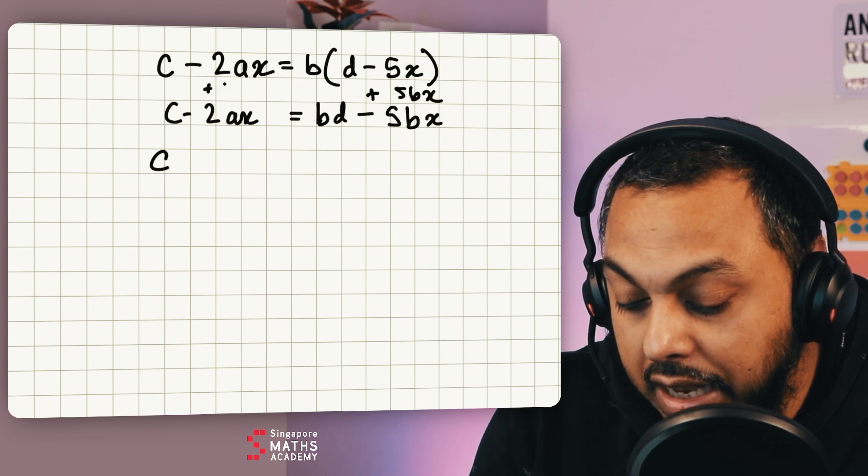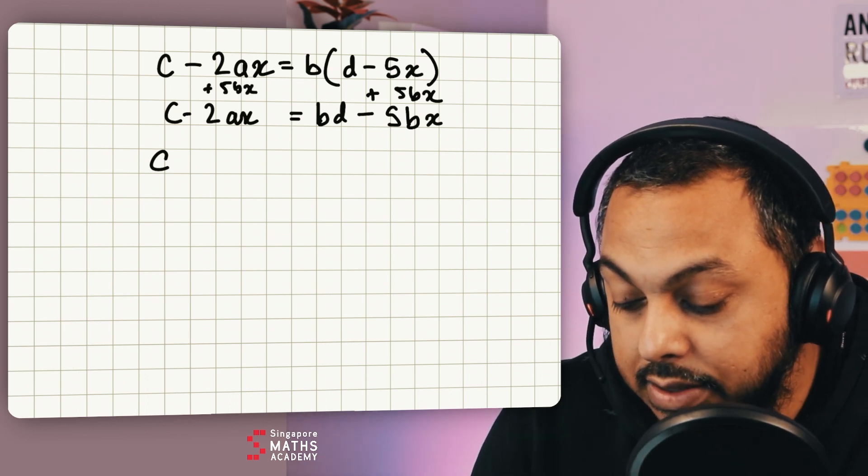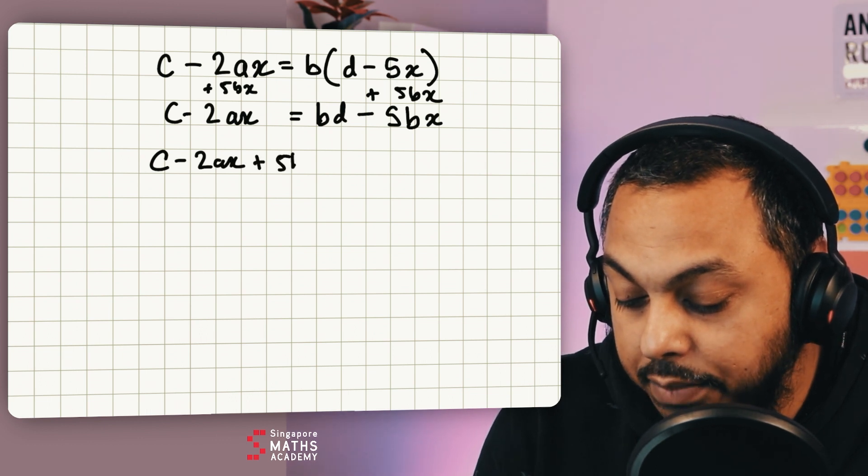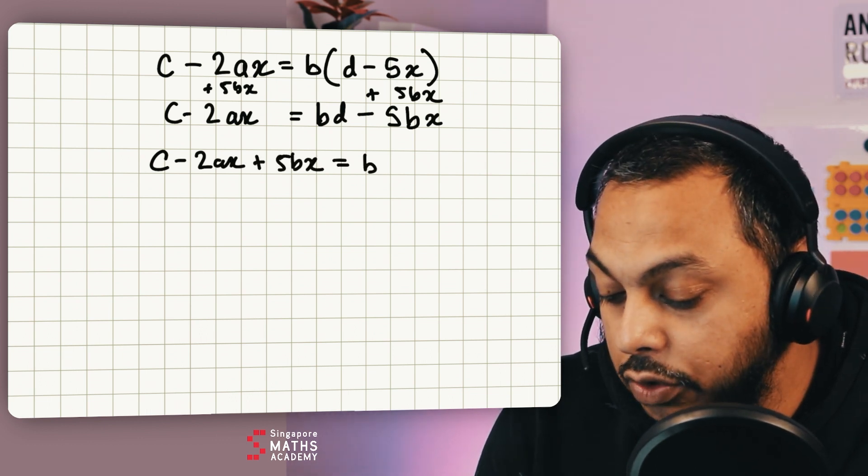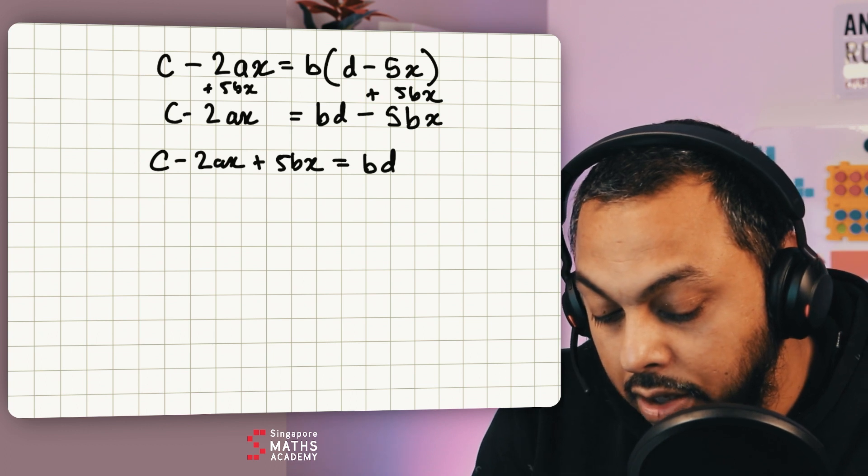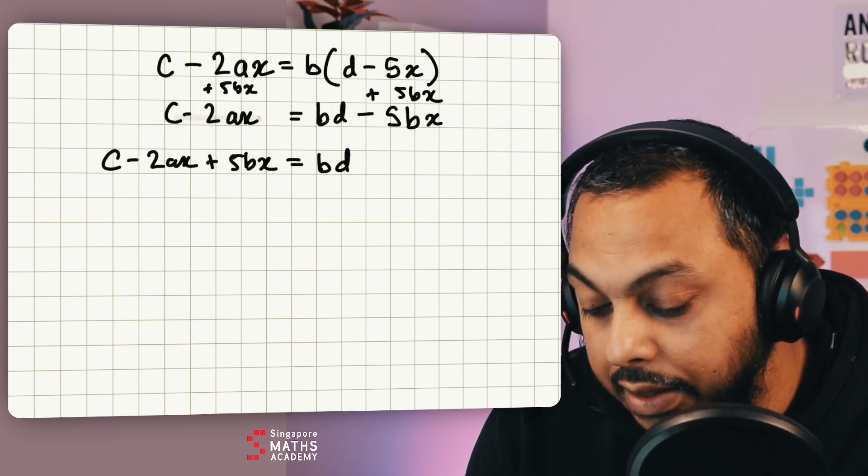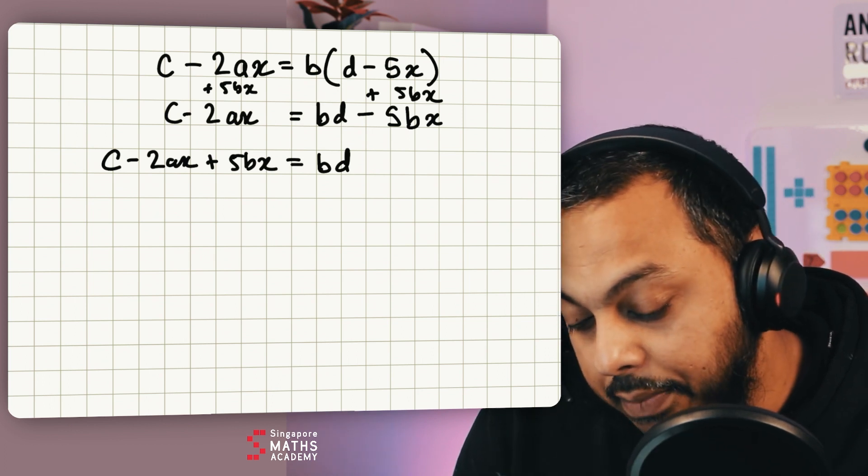And so I get c and add 5bx on both sides and so I get c take away 2ax add 5bx is equal to bd. Okay so I get something like that so far. And then the next step is for me to try to remove everything that's not linked with x which is like the c in this case.